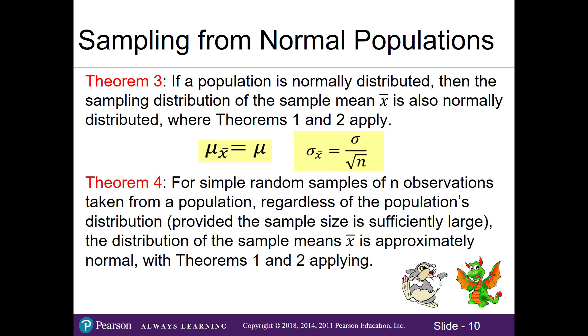For theorem 4, which you watched a video using the bunnies and dragons as an example, it states that the simple random samples of n observations taken from a population, regardless of the population's distribution, meaning it could be any kind of shape, provided that the sample size is sufficiently large, then the distribution of our sample means is approximately normal, or bell-shaped. Therefore, theorems 1 and 2 still apply. Something to remember is that the larger the sample size, the better the approximation to the normal distribution. If you haven't watched it yet, please watch it right now.